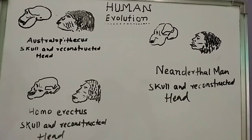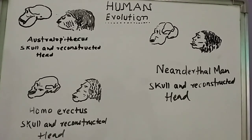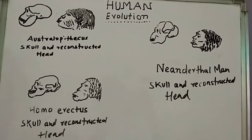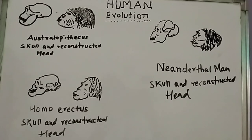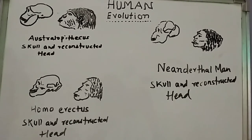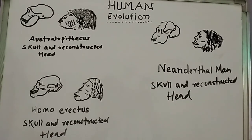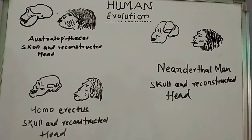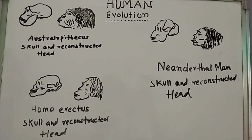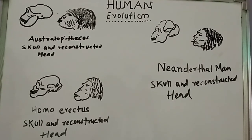Their brow ridges projected over their eyes. The characters you have to learn are: cranial capacity, chin, face — prognathous type — canines, and bipedalism. Height was nearly 1.2 to 1.5 meters. Next, we have Homo erectus.